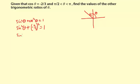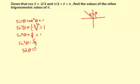Simplify: negative two-thirds times negative two-thirds is four-ninths. Subtract four-ninths, so sine squared theta equals five-ninths. Taking the square root of both sides, sine of theta is plus or minus the square root of five-ninths, which equals plus or minus the square root of five over three, since the square root of nine is three.